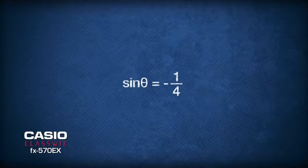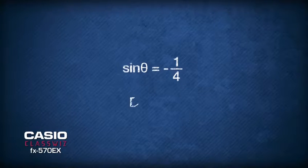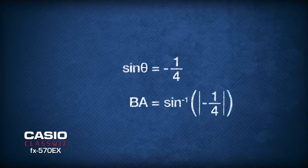To solve sinθ = -1/4, let's inverse the trigonometry to find the basic angle that generates the ratio of -1/4. To find this basic angle, we need to assign the absolute value of the ratio.